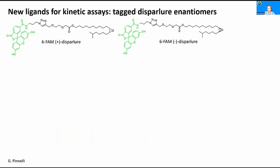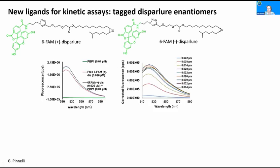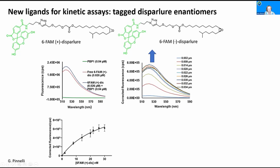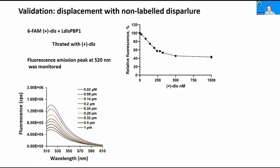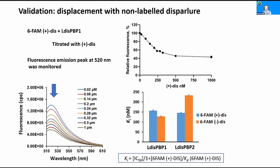We then did studies with a fluorescently labeled pheromone — we added an oxygen, a linker, and a fluorophore. When this molecule is bound to the PBP, the fluorescence increases, allowing very nice titrations and binding isotherms. The ligand selectivity is the same as known before: PBP1 prefers to bind minus and PBP2 prefers to bind plus-disparlure. We verified this by a displacement experiment with the corresponding non-labeled enantiomers, monitoring the decrease in fluorescence. The fluorescent pheromones bind to the same sites as the non-fluorescent ones, with the same enantioselectivity.